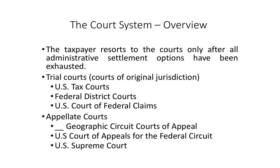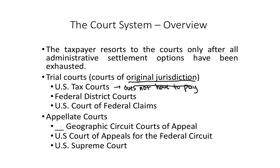Here's an overview of the court system. The taxpayer resorts to the courts only after all administrative settlement options have been exhausted. The taxpayer files their individual tax return, the IRS approaches the taxpayer — maybe a few years later they get audited and receive a deficiency letter. There's the IRS appeals process, settlement, and negotiations that can occur. At some point, taking it to court may be considered. Trial courts are the courts of original jurisdiction — the first courts that hear the action. There are three: the U.S. Tax Court, where the taxpayer does not have to pay to play.